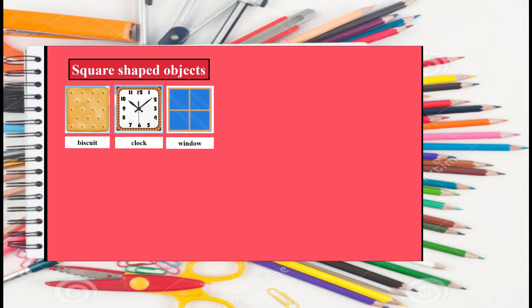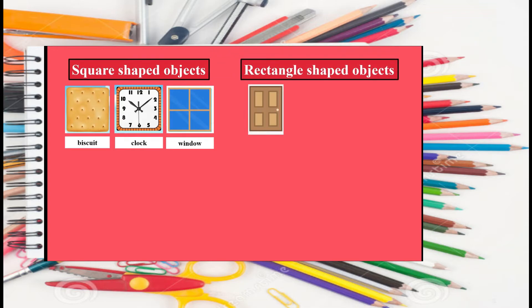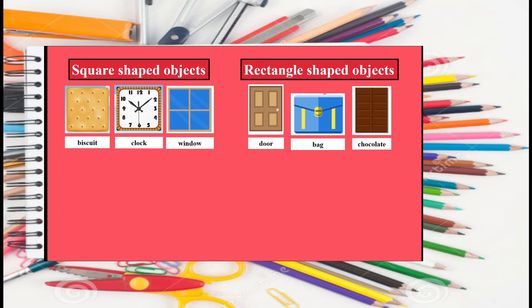Let's see the examples of rectangle shaped things. What is this? It's a door. What's this? It's a bag. And what's this? It's a chocolate. Do you like it? Okay, I also like it.